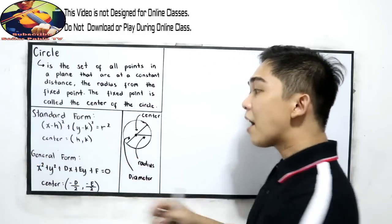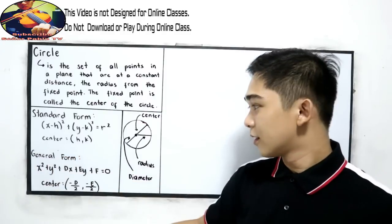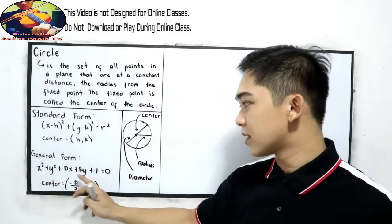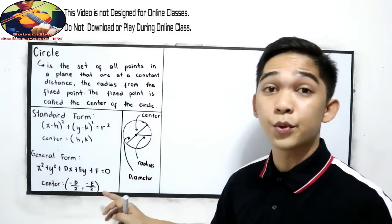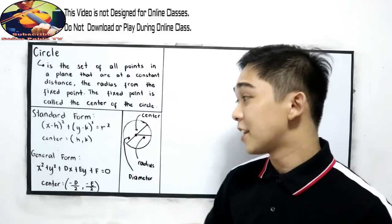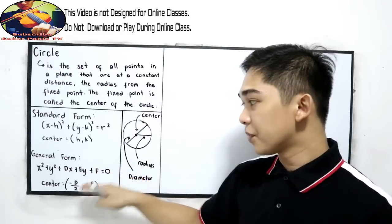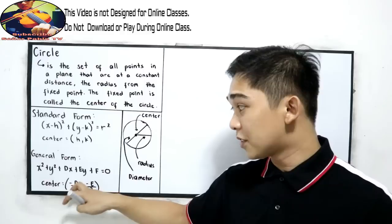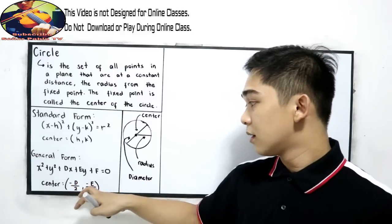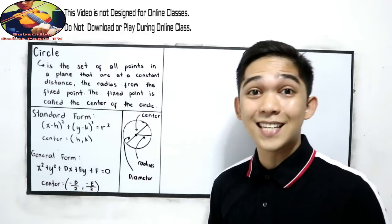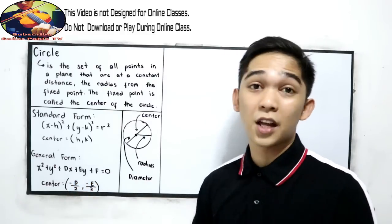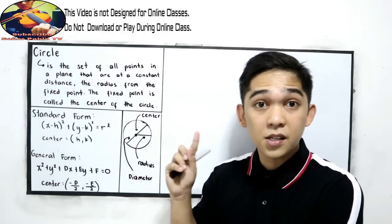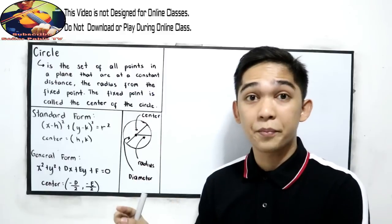Next, we have the general form: x squared plus y squared plus dx plus ey plus f is equal to 0. In the general form, we have a shortcut formula for the center: negative d over 2 and negative e over 2. To better understand the center, let us first discuss transforming general form into standard form.